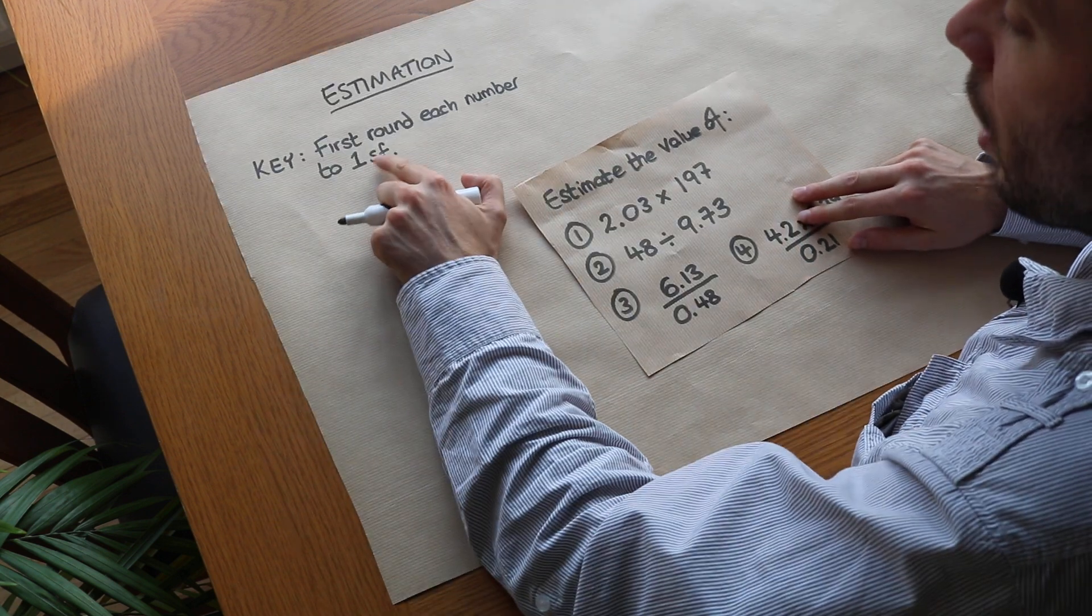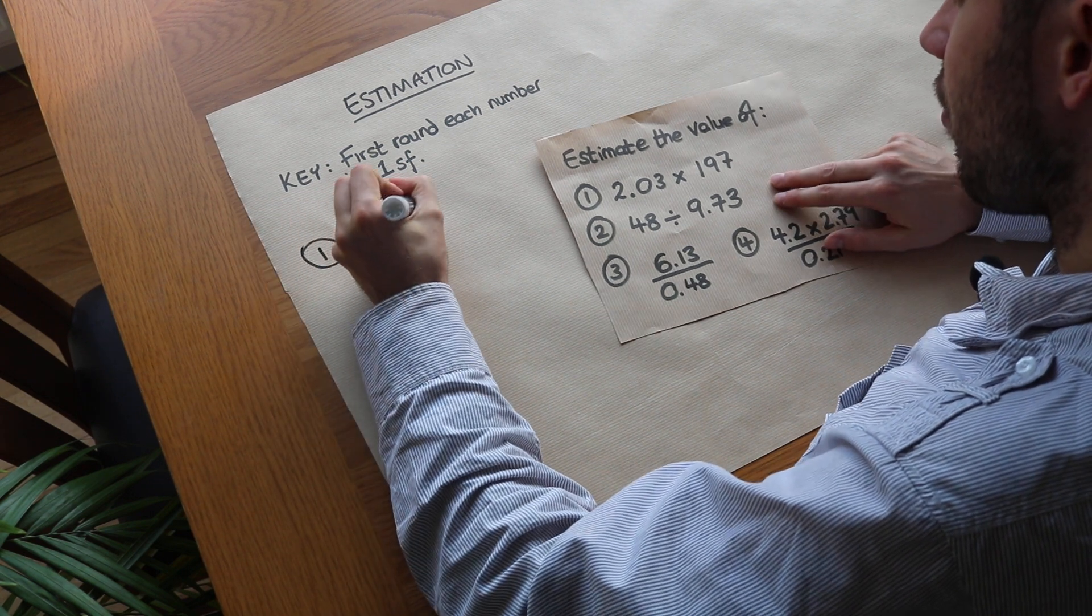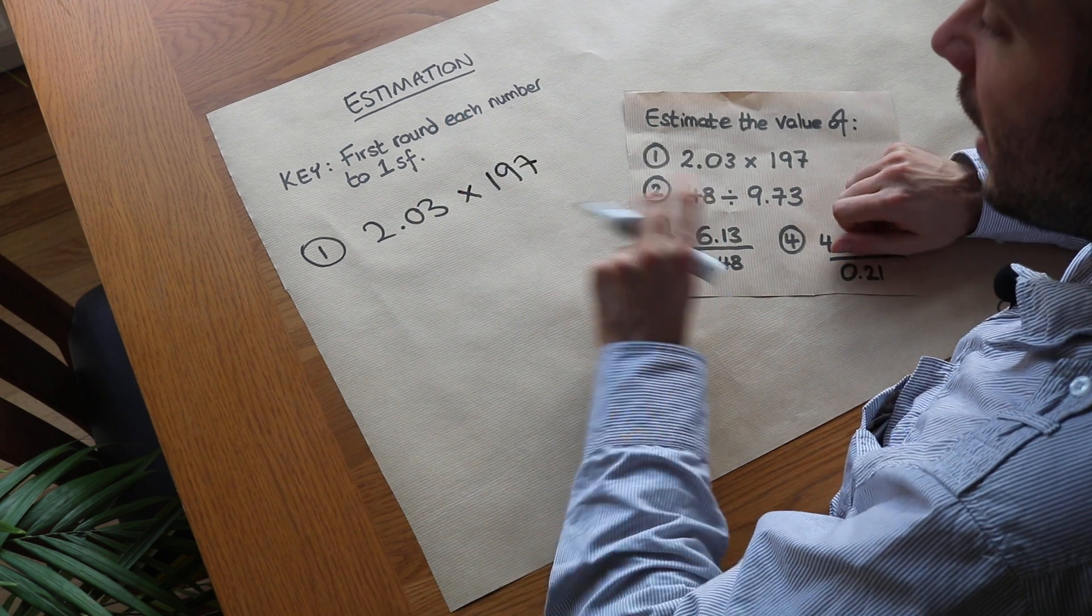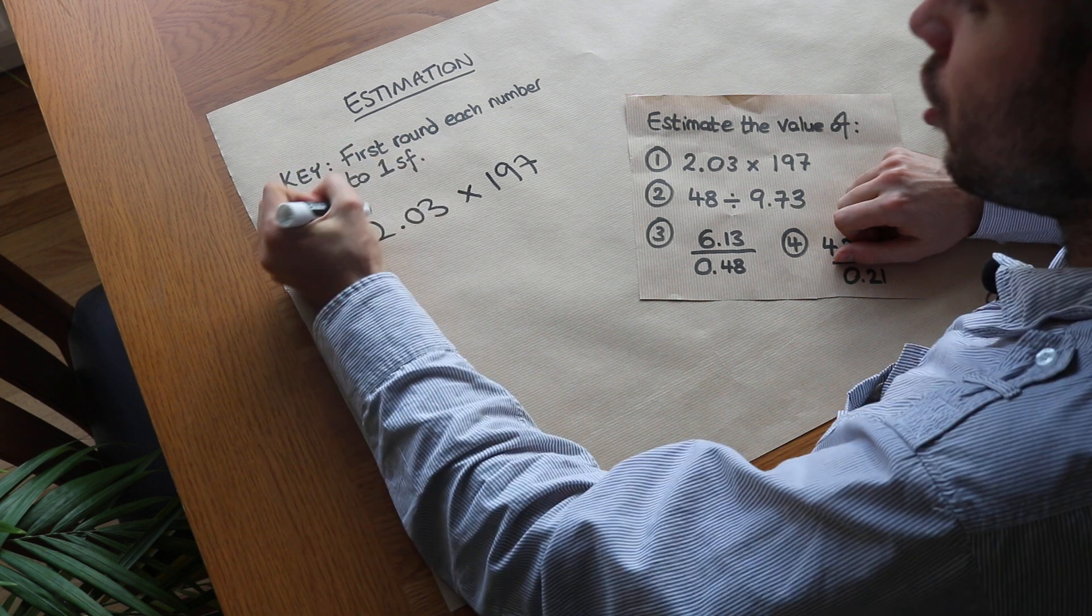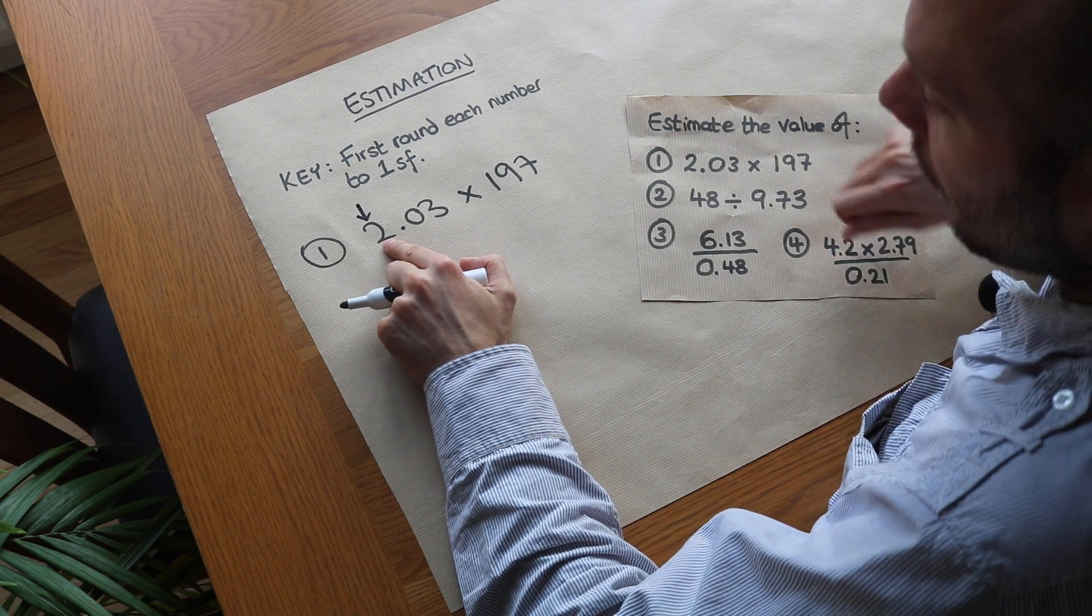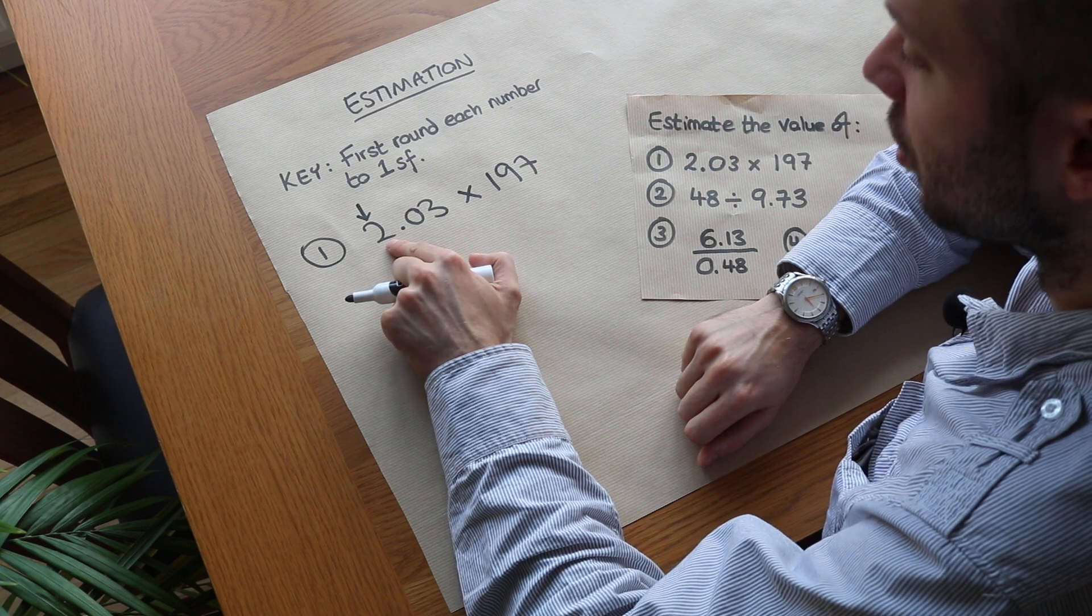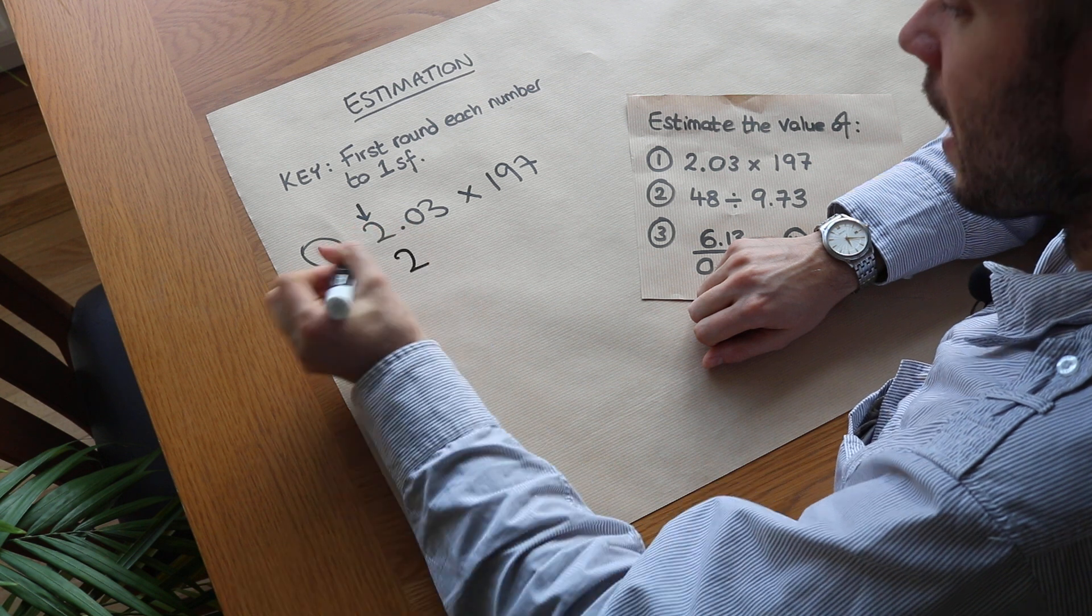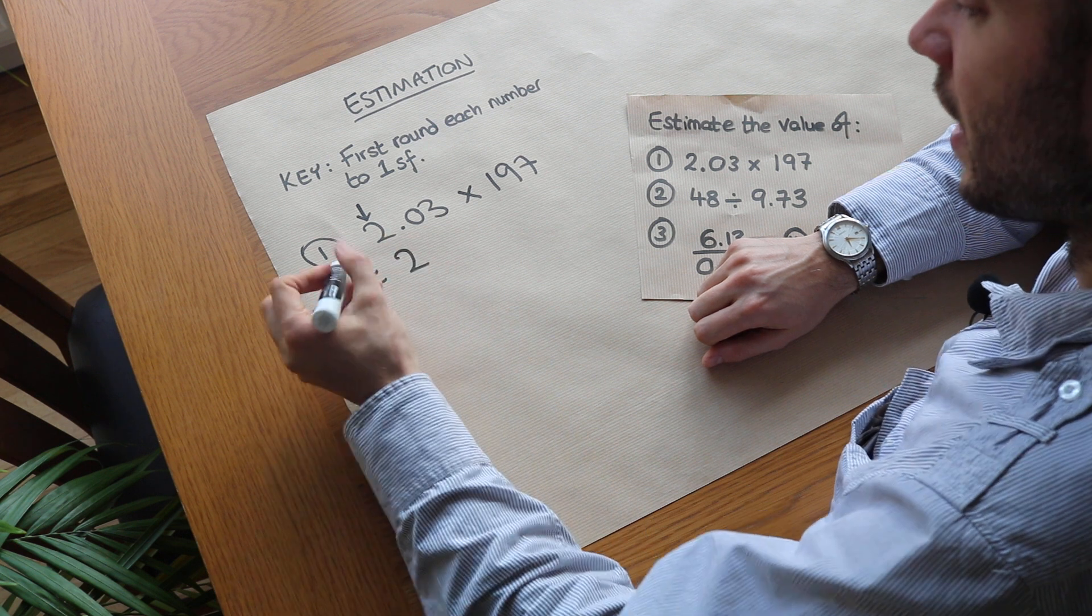Let's take this first question: 2.03 times by 197. If we round each of these to one significant figure, remember you just look at the first non-zero digit and then check the digit after. Is that greater or equal to 5? No it isn't, so the 2 stays as it is and we discard any further digits. So that's 2, and we can write this symbol here which means approximately equal to.